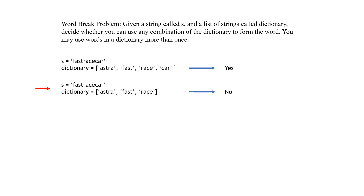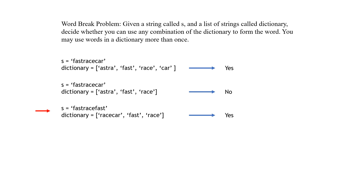For this example, the output is no, because there's no possible way we can use the dictionary to create the string. For this next example, the answer is yes, because we can use fast, then race, then fast again to create the string fast race fast.